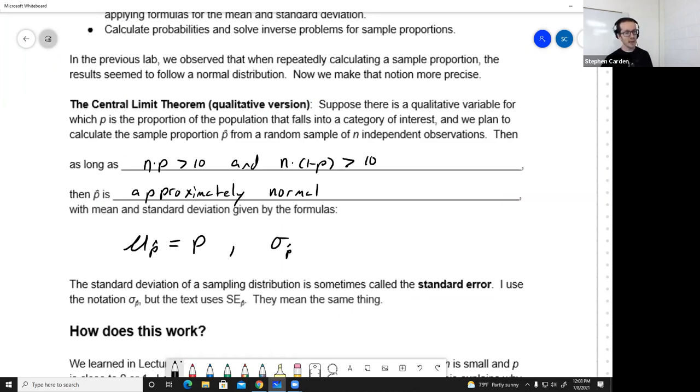The standard deviation of p-hat is a little more complicated, and we will do a little bit of work to see where this comes from. But it's p times 1 minus p over n, all under a square root. All right, these two formulas, you're going to see these pop up over and over again from now to the end of the semester. So I don't usually recommend memorizing things, but you may as well, because you're going to see it so much.